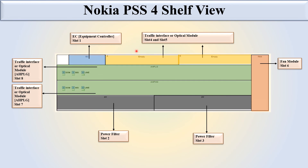In the current self-view, these two slots are used for the HPL or HPLG, which is a type of amplifier card in Nokia. These two slots are fixed for the traffic interface or optical module. That is all about the Nokia PSS4 self-view, thank you.